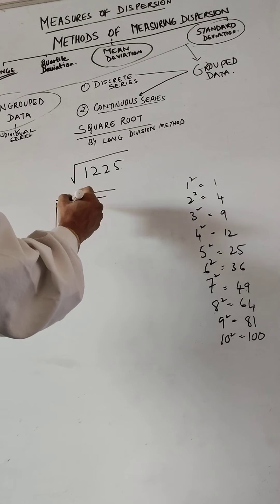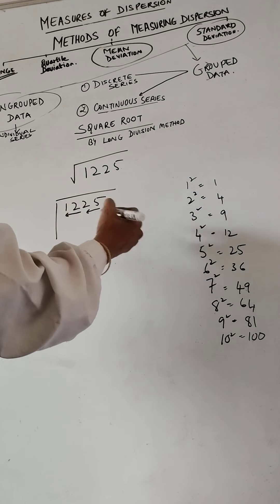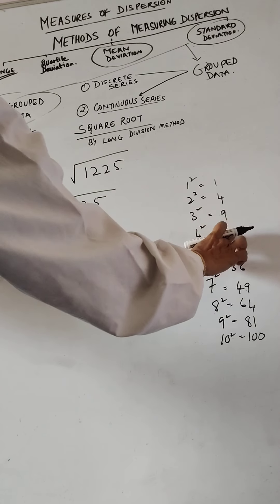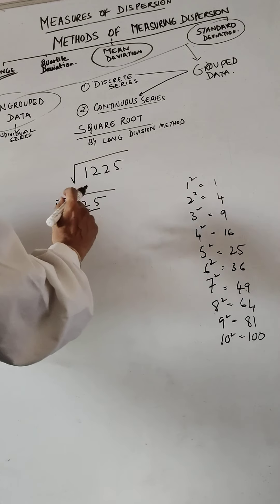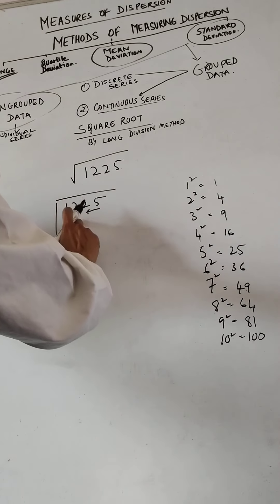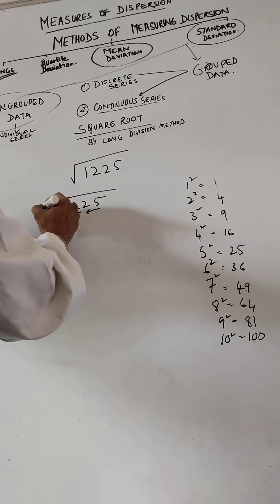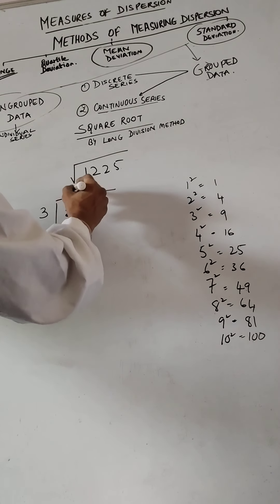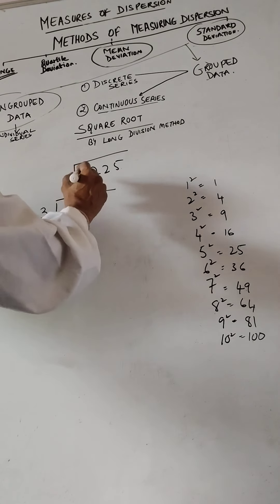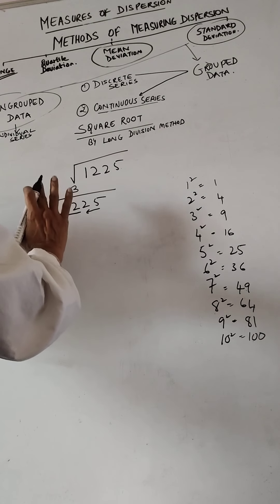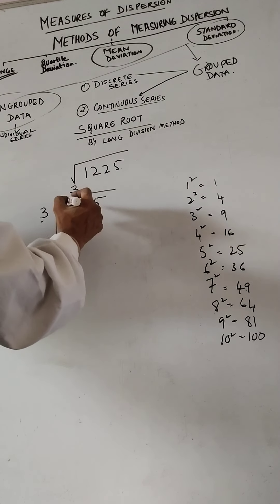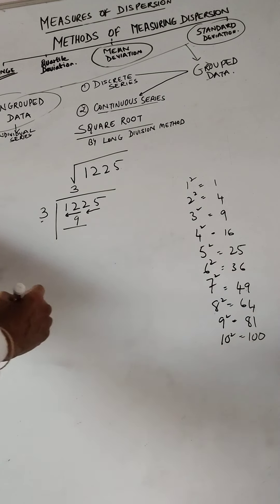Now let's take 12 — which perfect square is nearest to 12? We can see 4²=16 is too big. The nearest is 9. So I write the divisor as 3 and the quotient as 3. Remember, this is square root long division, not normal division — the divisor and quotient must be the same. So 3×3=9.